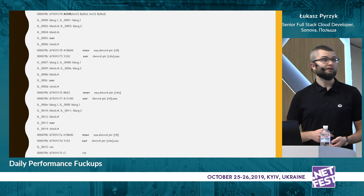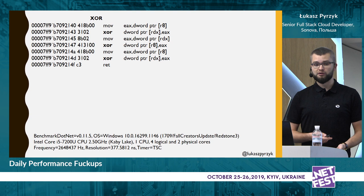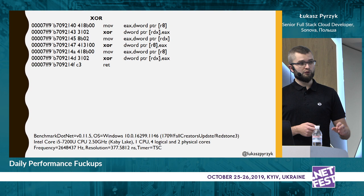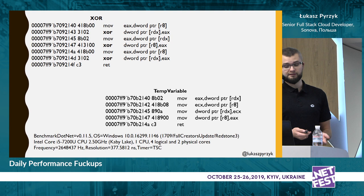This is the printout of assembly from the XOR method. As you can see, we have a move, XOR, move, XOR, move, and XOR — and then the method finishes. For comparison, I wrote a simple method that swaps variables using a third temp variable. The printout is quite simple — we have only four move operations. So we added three XOR operations but have one move less.